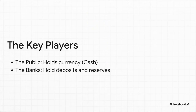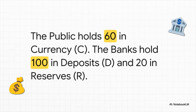Let's meet the main characters in this story. On one side, you've got the public — that's all of us, holding physical currency, cash. And on the other side, you've got the banks. They play a super important middleman role, holding our deposits and also keeping some of that money in what they call reserves. To make this concrete, we'll use three simple numbers: the public has 60 shekels in cash — we'll call that C — they've put 100 shekels into their bank accounts, that's D for deposits, and of that 100, the banks are holding on to 20 as reserves, we'll call that R. So C is 60, D is 100, and R is 20.